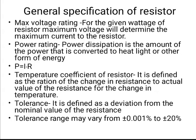The maximum voltage rating indicates the maximum current that can flow through that resistor. For the given voltage of the resistor, the maximum voltage determines the maximum current through the resistor. So if we know the maximum voltage rating, we can determine the maximum current that can safely flow through that resistor.